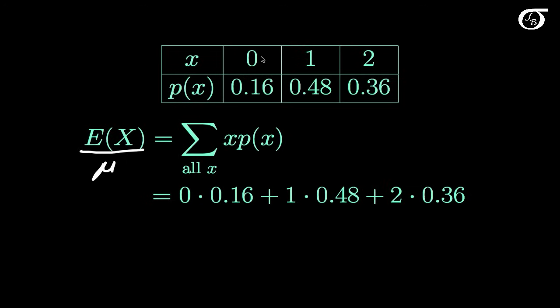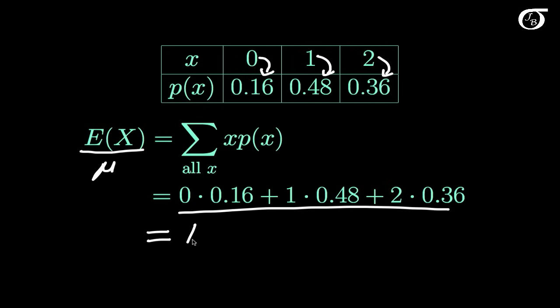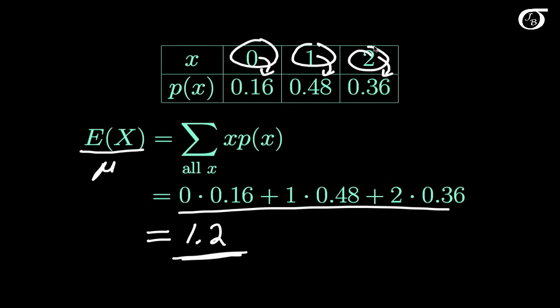We take 0 times its probability of occurring, plus 1 times its probability of occurring, plus 2 times its probability of occurring, and add that up. If we do so, we get that E[X] is equal to 1.2. Note that 1.2 is not one of the possible values of x. When we say the expectation of X, we're not saying a value we would expect to get — we are talking about the theoretical mean of the random variable X.